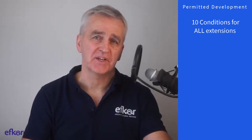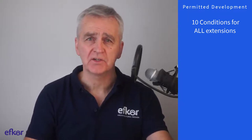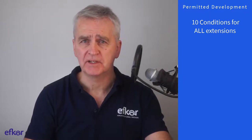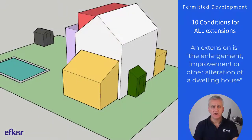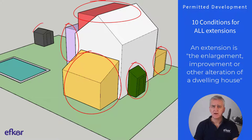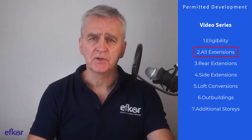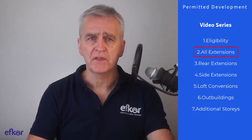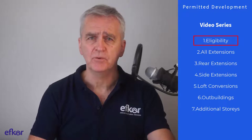In this video, I describe the 10 conditions common to all extensions built under permitted development. An extension is defined as the enlargement, improvement, or other alteration of a dwelling house, and so this video is relevant for side extensions, rear extensions, loft conversions, garage conversions, porches, and all types of outbuildings. This is video number two in a series that started with video number one, considering eligibility for permitted development.